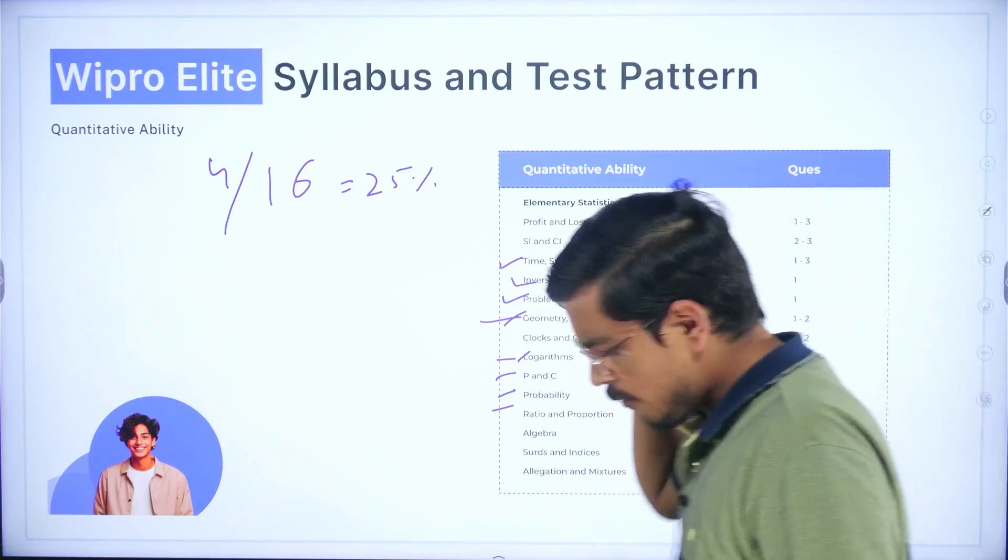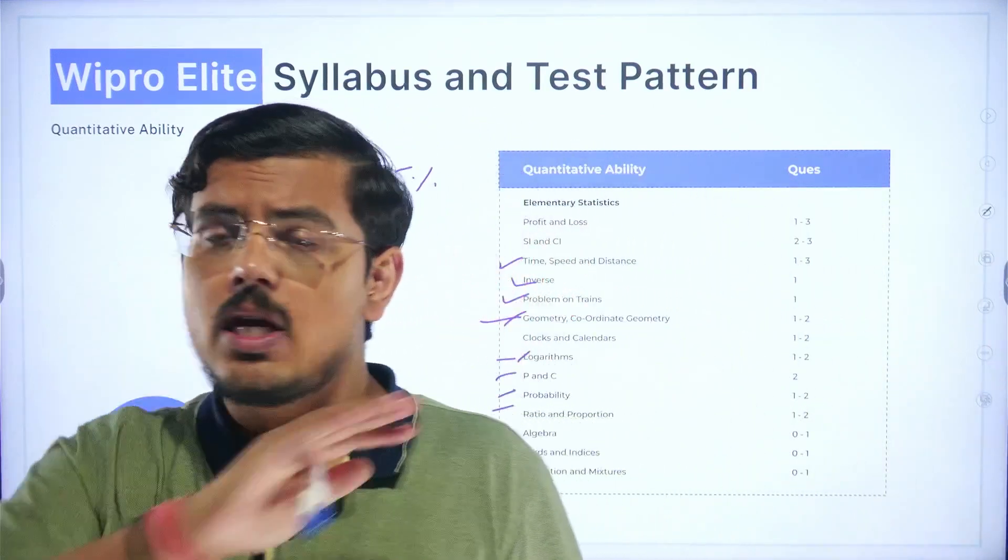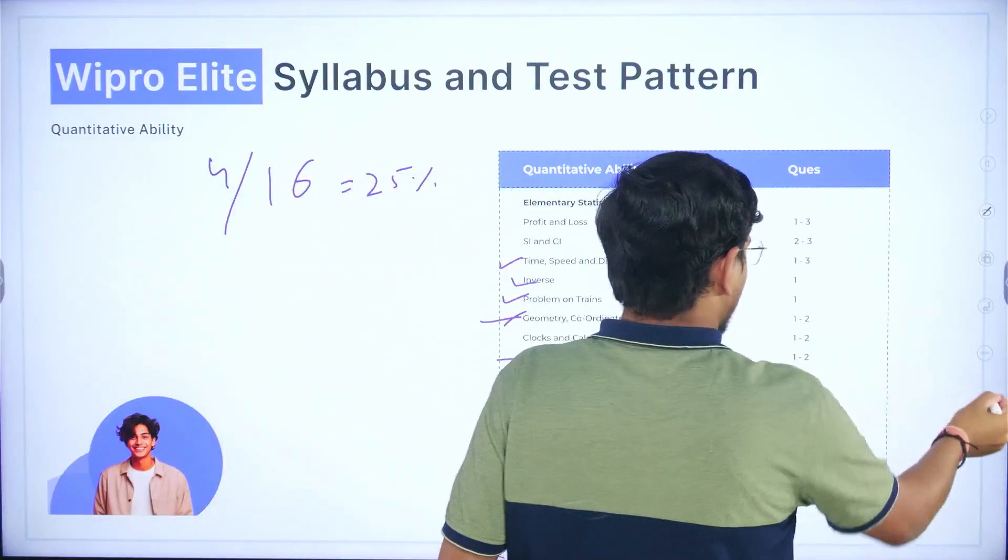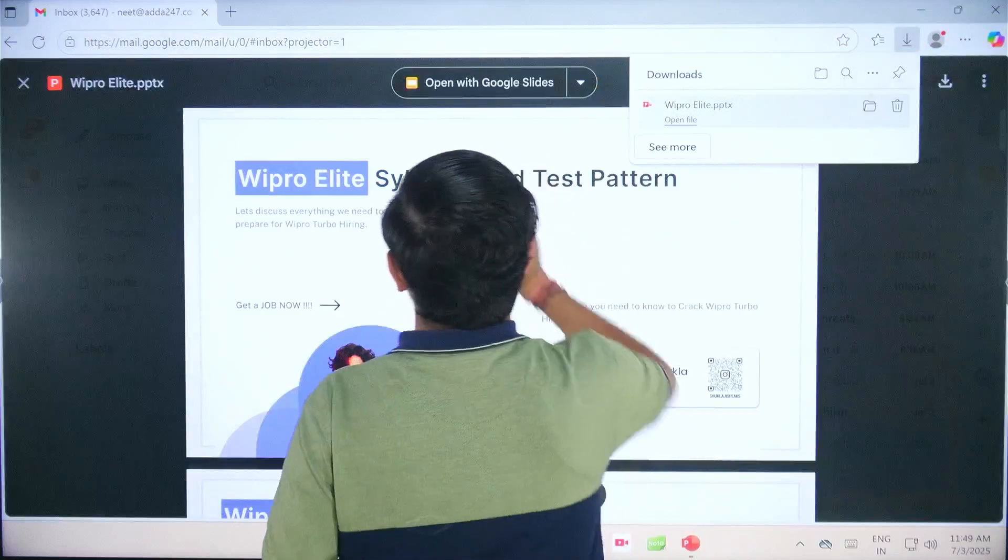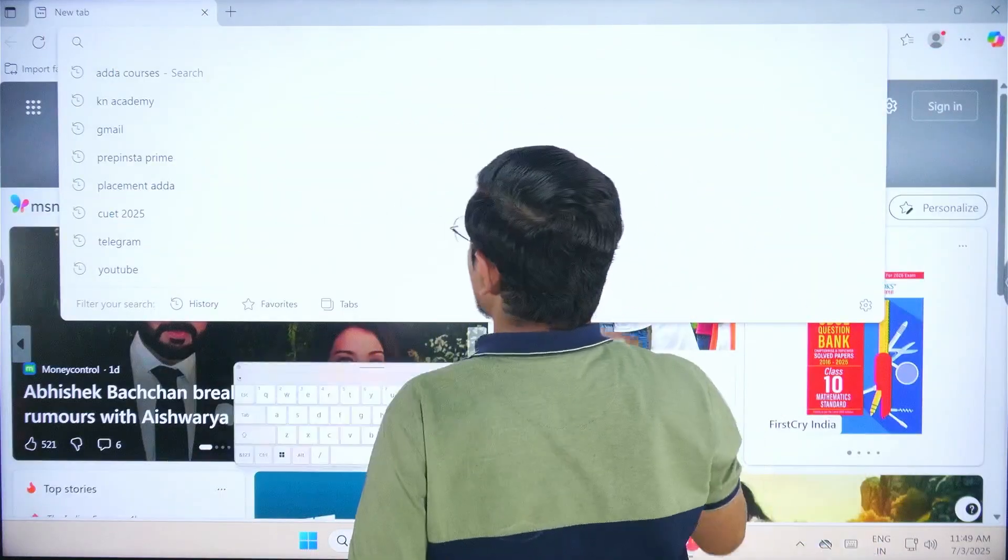If you carefully see it is approximately 16 questions and if you miss any topic, for example if you left geometry, you left logarithms and you could have attempted four questions there, so basically you're actually leaving 25 percent of the exam. There's no point leaving 25 percent exam, so cover every topic written here.